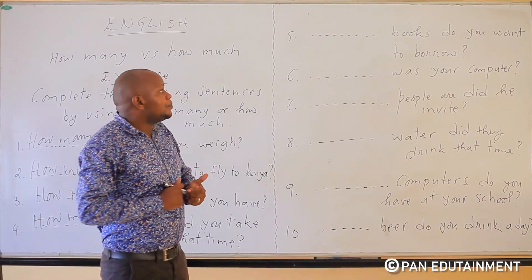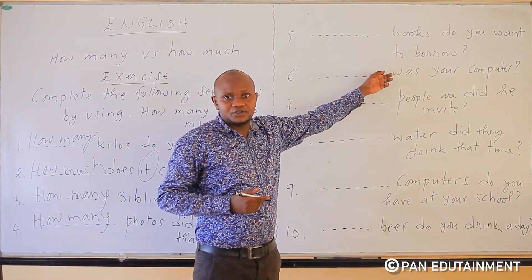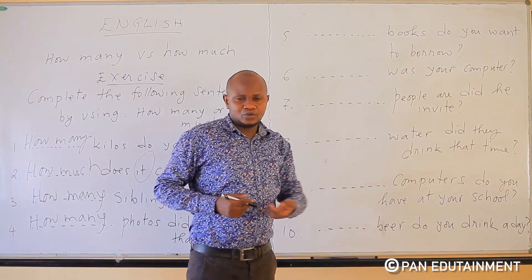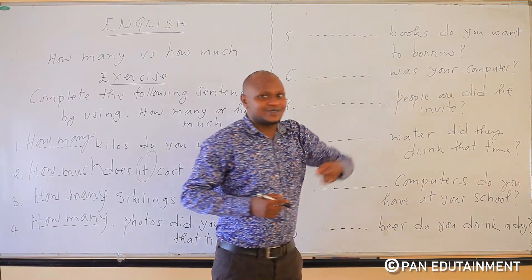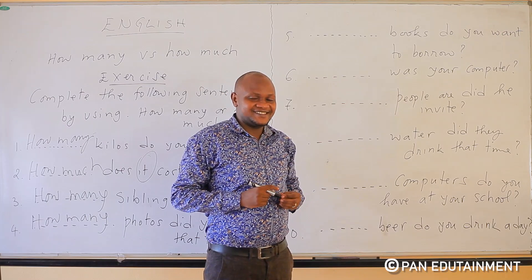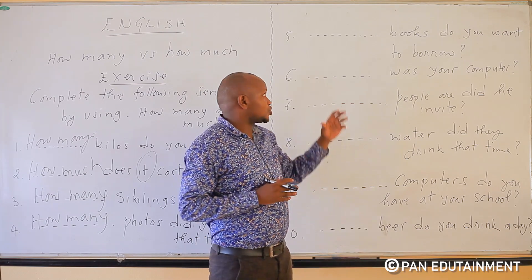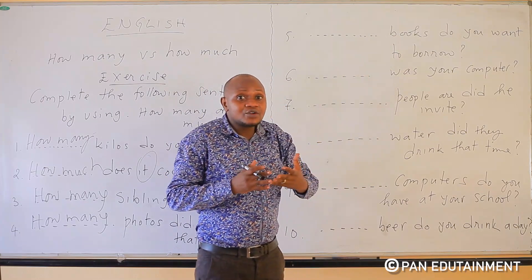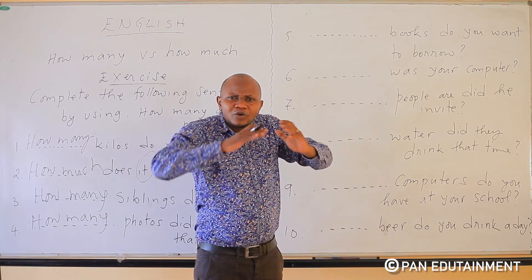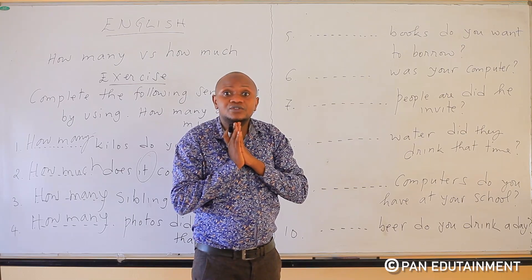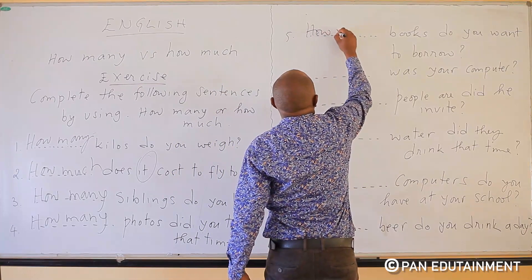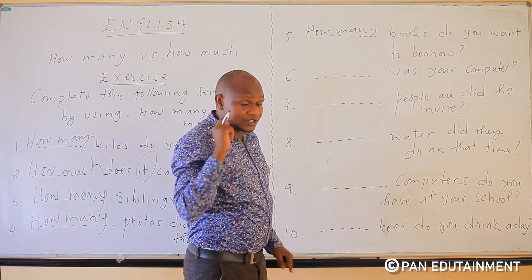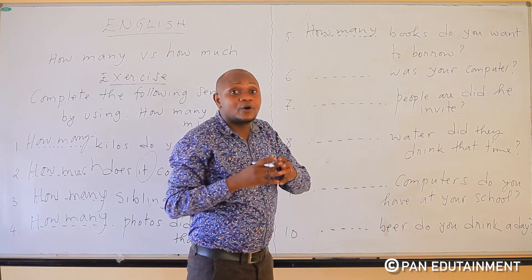Number five: blank books do you want to borrow? We have the word books — books are countable — that's why we say how many books do you want to borrow? We use how many for countable nouns. Do you remember? But we use how much for uncountable nouns.